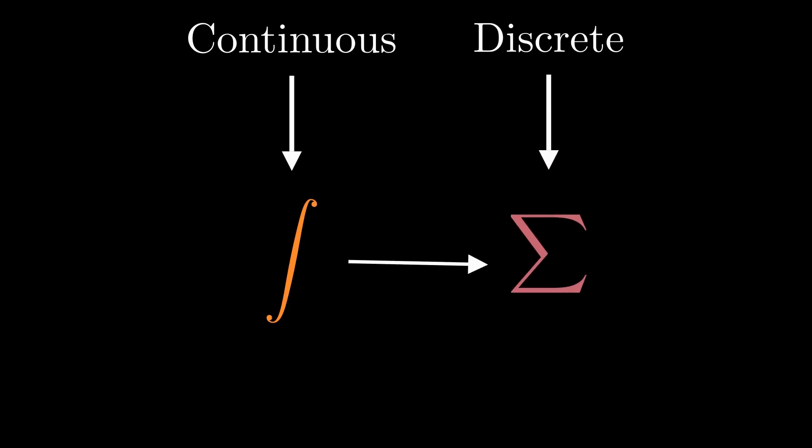So what we observed in the tables is a discrete version of the mean value property from the continuous world. And this reveals a deep connection. Every continuous concept has a natural counterpart in the discrete setting. An integral becomes a sum.